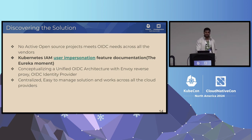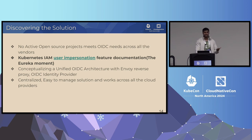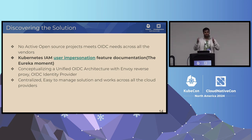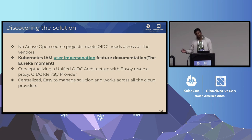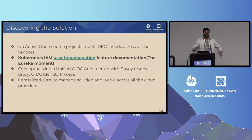Whenever things get too complicated, my gut feeling is to go back to fundamentals. So we started looking at the Kubernetes authentication documentation — the RBAC documentation — to figure out how many ways Kubernetes actually supports access management. There's certificate auth, service account, OIDC, and then something called user impersonation. User impersonation is where you're talking to the cluster with a cluster admin account, but in that specific request context you tell Kubernetes to scope it down to a specific user and specific user groups.